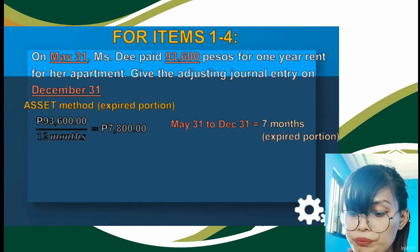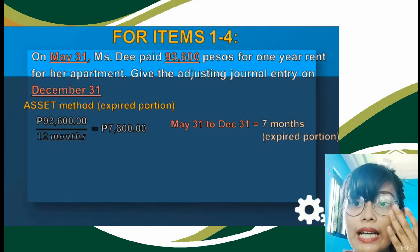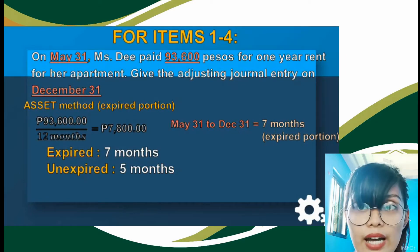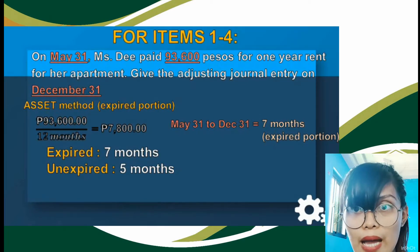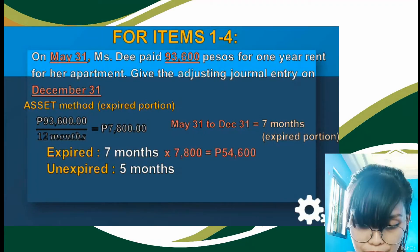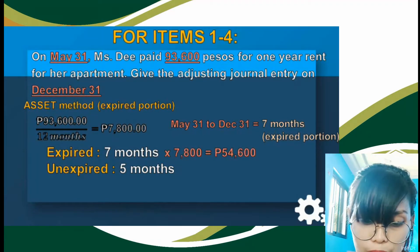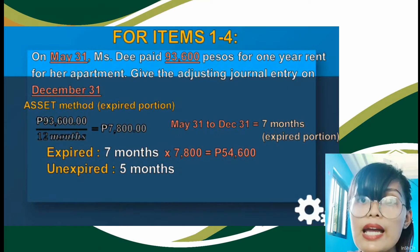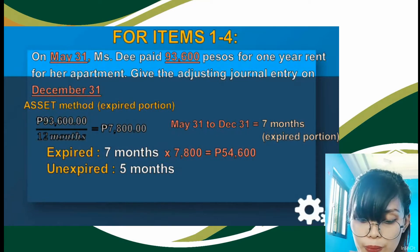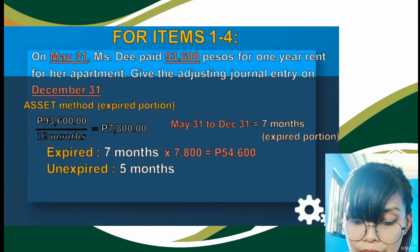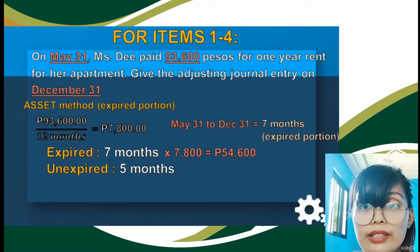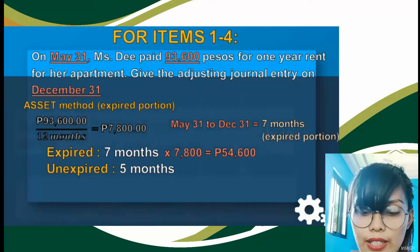The remaining 5 months is called the unexpired portion — the portion not yet used as of the cut-off date. Since we are using the asset method, we consider the 7 months expired portion. We multiply 7 by P7,800 and get P54,600. Take note of that amount because it will be used in our adjusting entry.